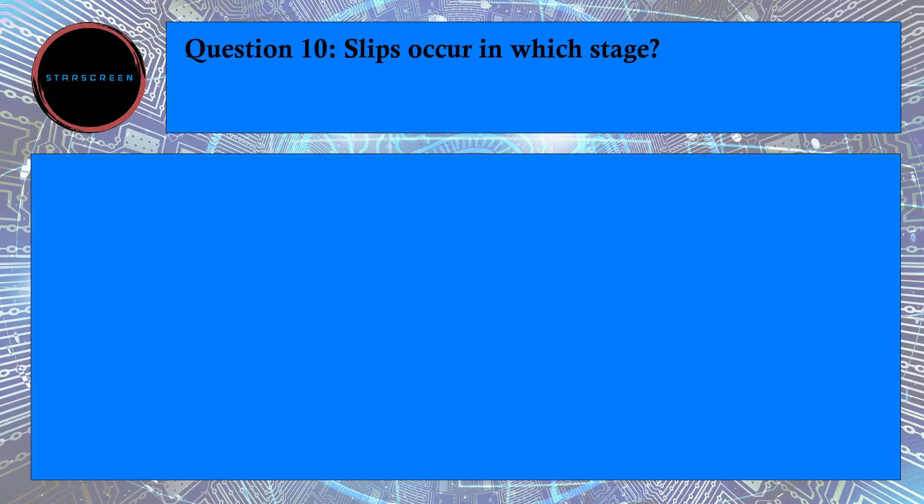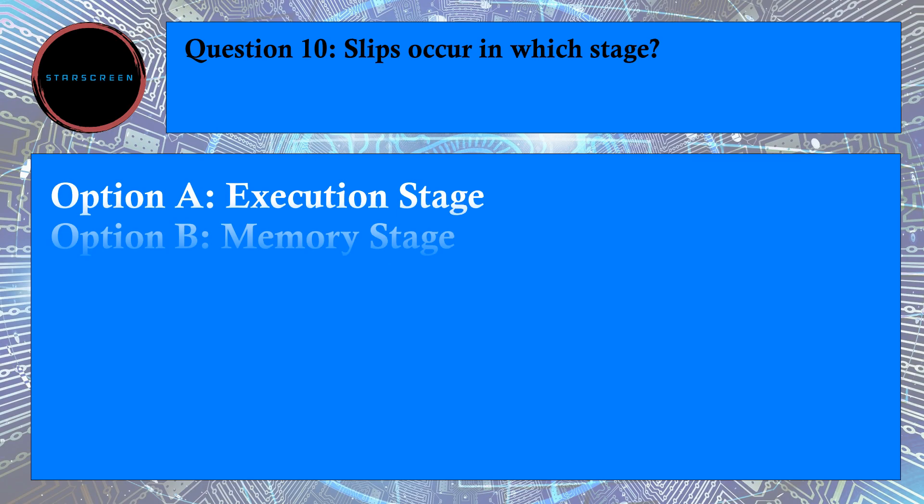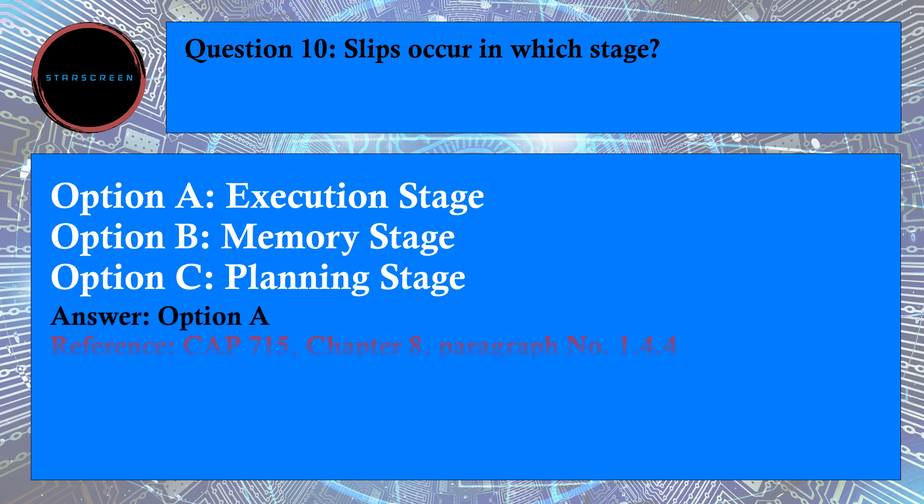Question number 10: Slips Occur In Which Stage? Option A, Execution Stage, Option B, Memory Stage, and Option C, Planning Stage. Correct answer is A, Execution Stage. For answer, refer to CAP715, Chapter 8, Paragraph number 1.4.4.